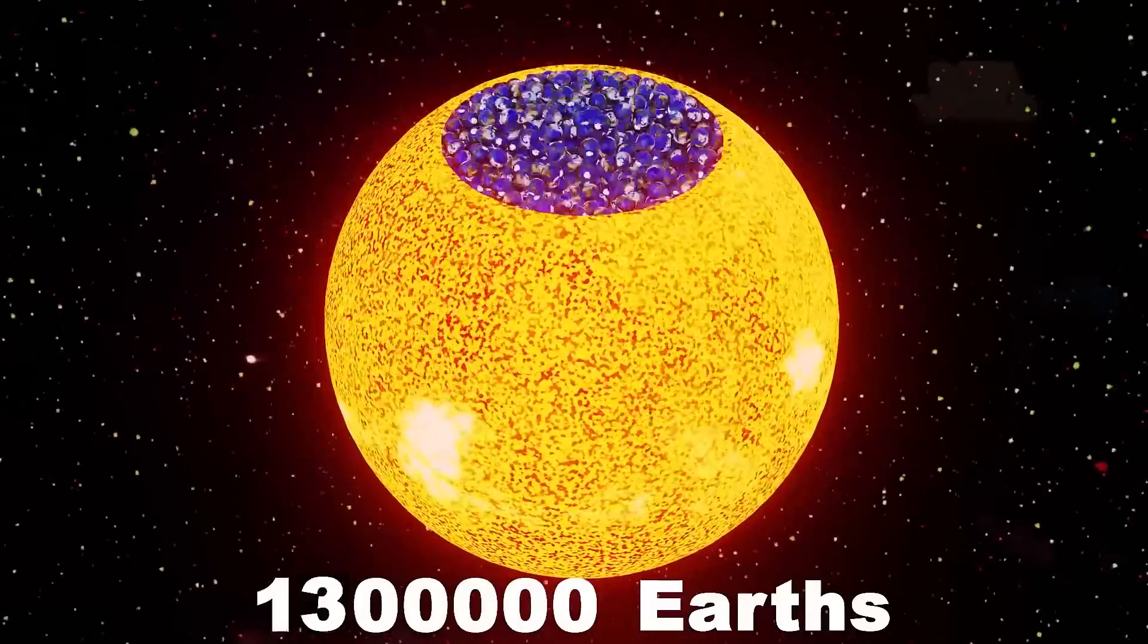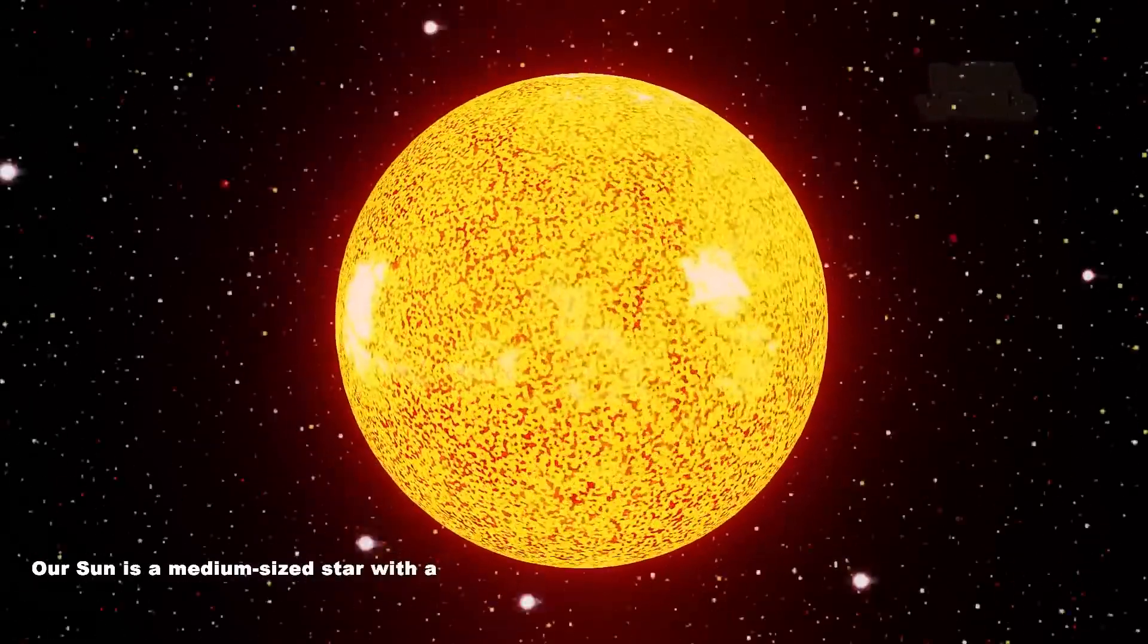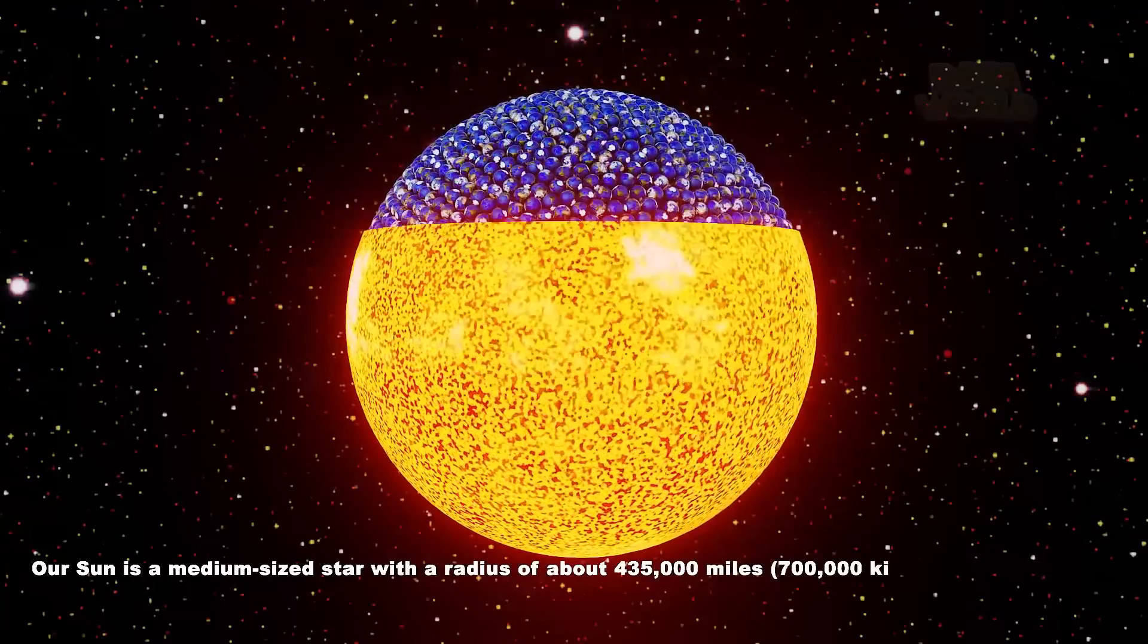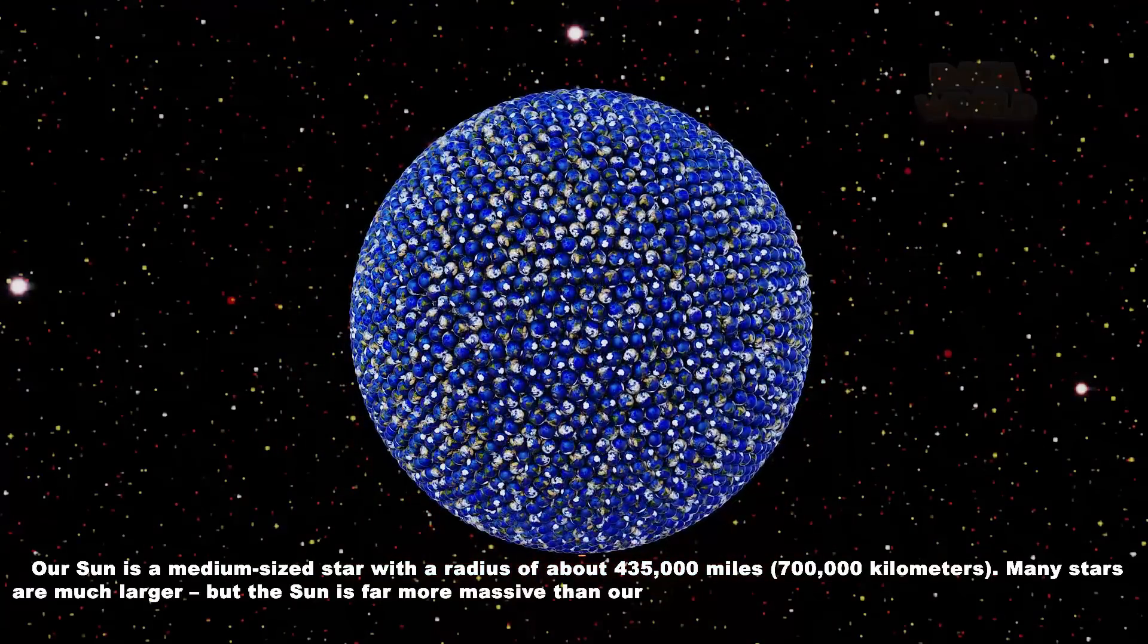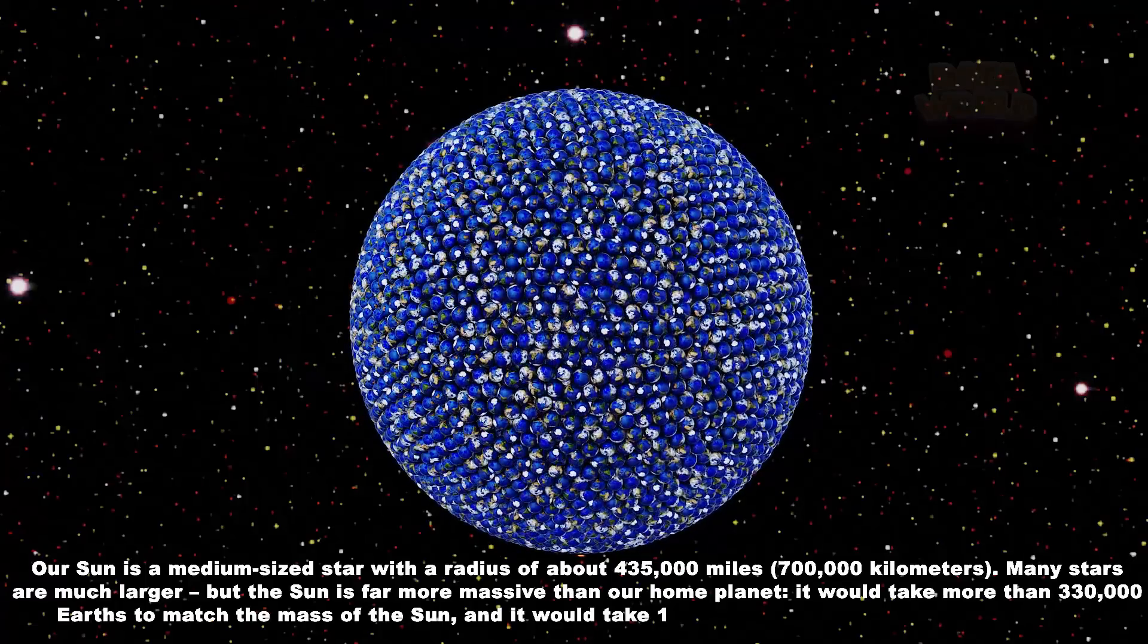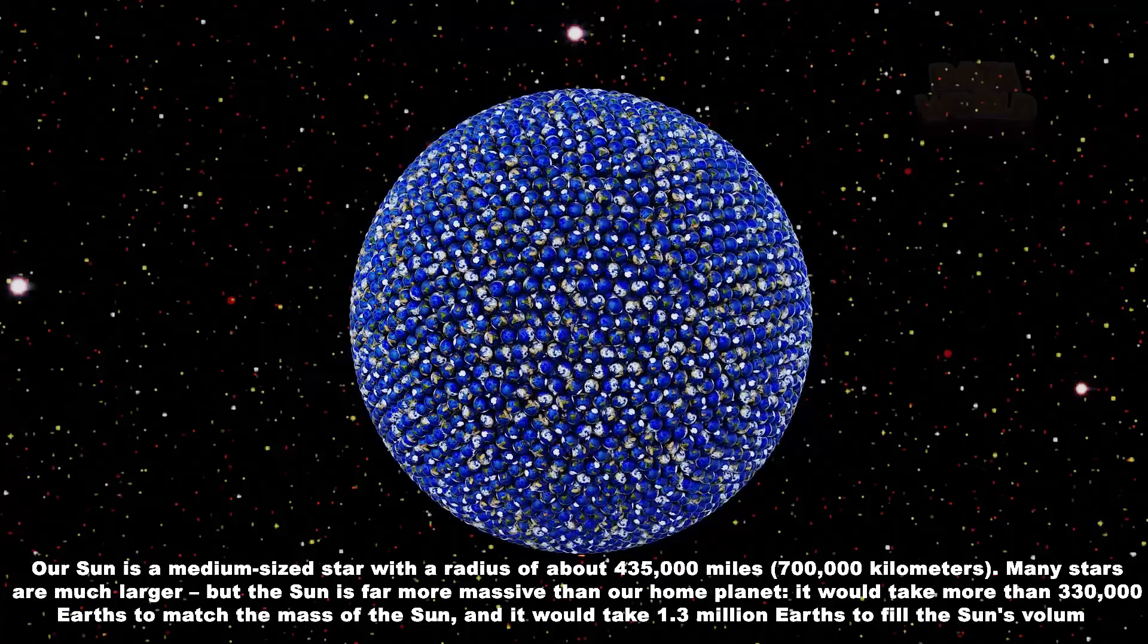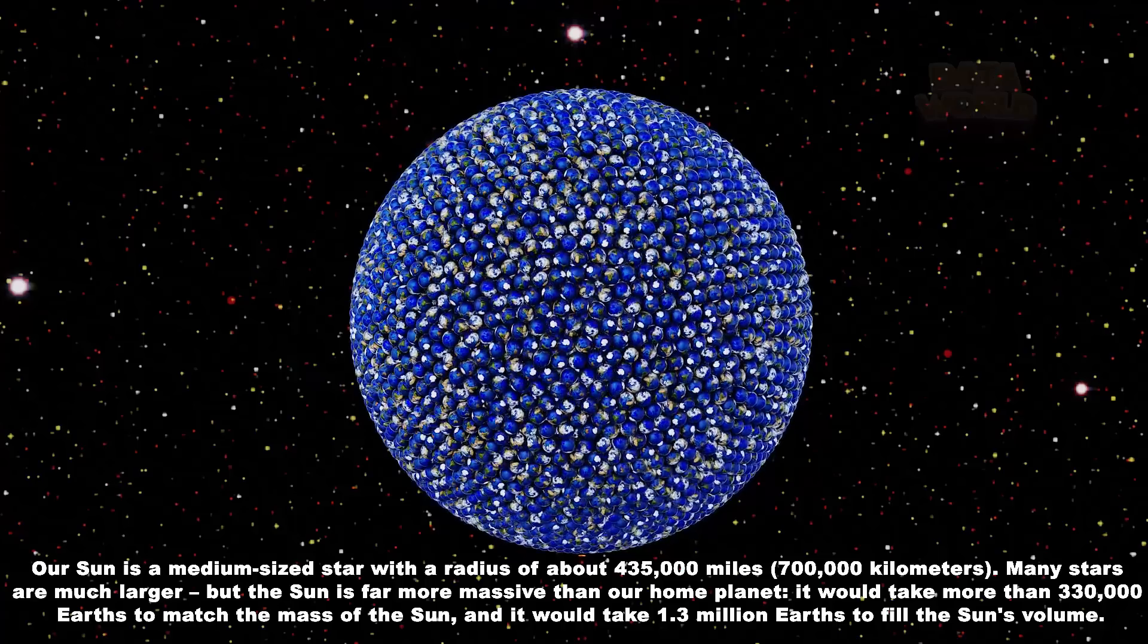1.3 million Earths. Our Sun is a medium-sized star with a radius of about 435,000 miles. Many stars are much larger, but the Sun is far more massive than our home planet. It would take more than 330,000 Earths to match the mass of the Sun.